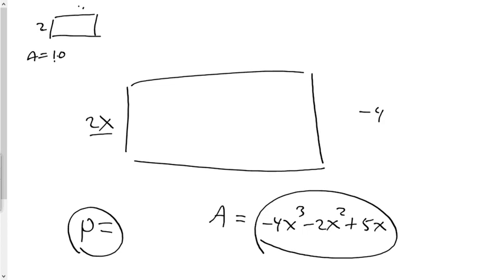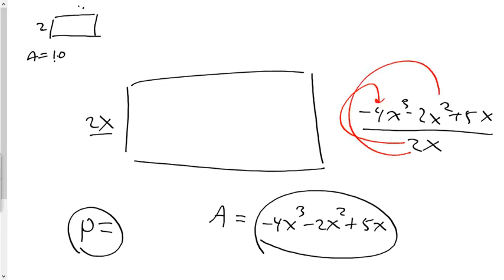So the same thing will happen when we use polynomials. Negative 4x cubed minus 2x squared plus 5x, all divided by the side we know, which is 2x. Once we have it written that way, we remember, because we're very smart people, that when you have a trinomial and you're using division, you need to use distributive property for both division and multiplication. So each of those terms will be divided by 2x.